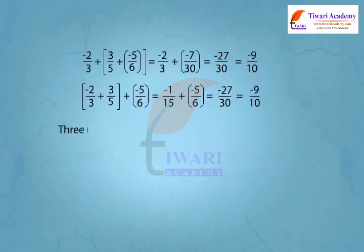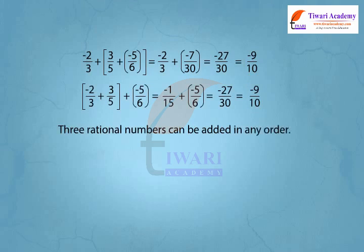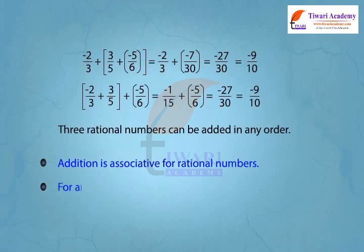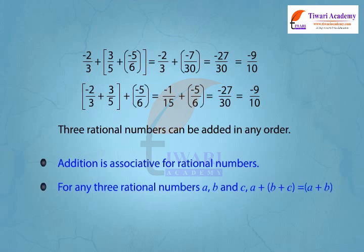Three rational numbers can be added in any order. Therefore, addition is associative for rational numbers. That is, for any three rational numbers a, b, and c: a plus (b plus c) is equal to (a plus b) plus c.